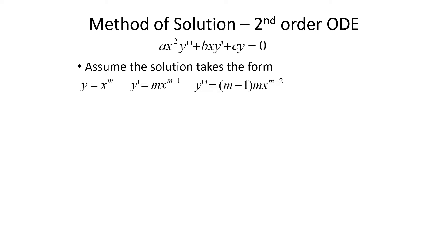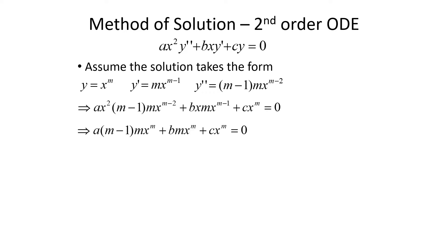Plugging y and its derivatives into the differential equation gives ax² · m(m-1)x^{m-2} + bx · mx^{m-1} + c x^m = 0. Combining the x terms in each case yields x^m in every term, so the equation becomes a·m(m-1)x^m + bm x^m + c x^m = 0.